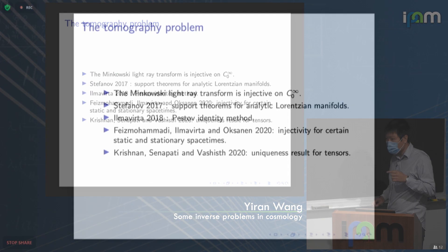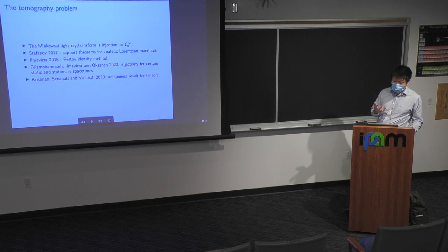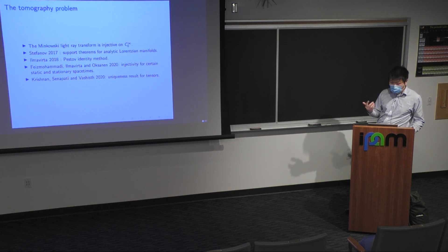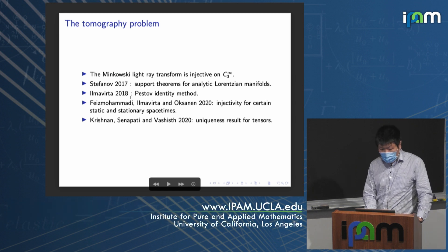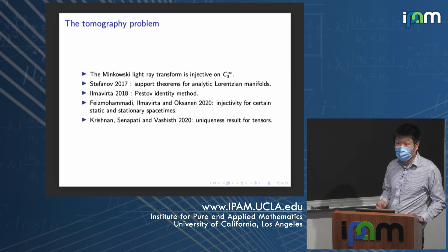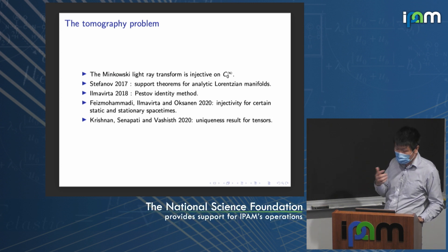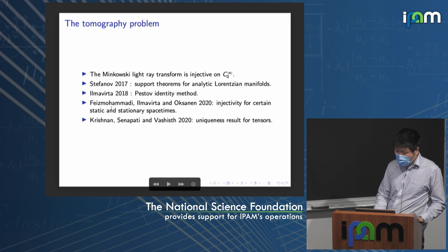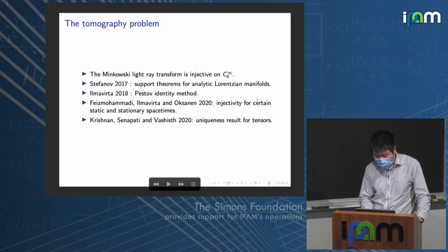There are some injectivity results, but only for compactly supported smooth functions — the key is the compact support. The Minkowski light-ray transform is injective on compactly supported smooth functions, but the proof relies on analyticity of the Fourier transform, so it is not stable. There is also a result by Stefanov (support theorem for analytic Lorentzian manifolds), results by Monard-Uhlmann for pseudo-Riemannian manifolds using the Pestov identity method (though this method does not apply to Lorentzian manifolds with signature (1,n−1)), and results for static/stationary spacetimes.